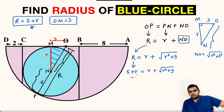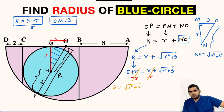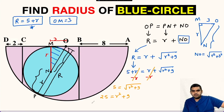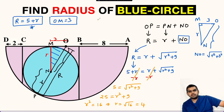Subtracting r from both sides gives us 5 equals square root of r squared plus 9. Squaring both sides: 25 equals r squared plus 9. Subtracting 9 from both sides: r squared equals 16. So r equals square root of 16, that is 4. The radius of the blue circle is 4 units. If you want more such videos, do subscribe to my channel. See you in the next video.